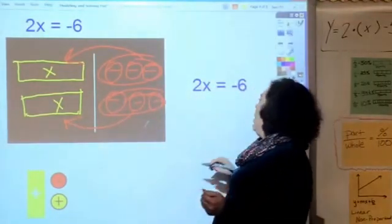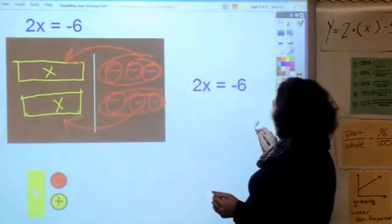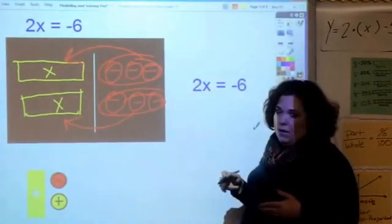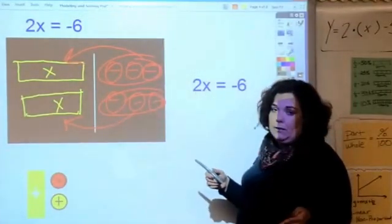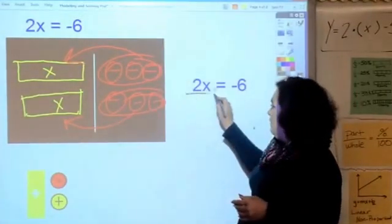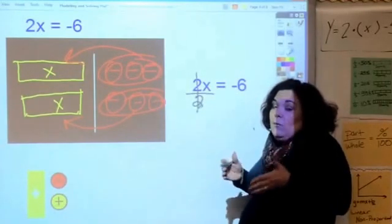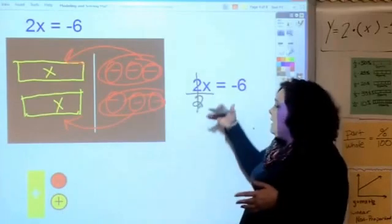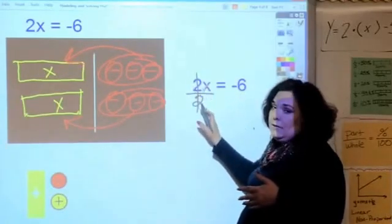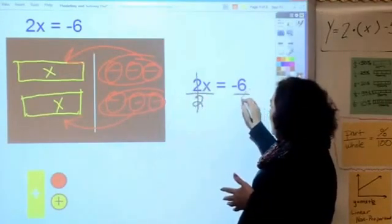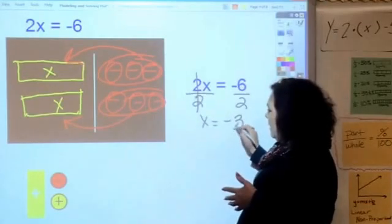If I'm going to do it mathematically, I've got 2x here. I want to get x by itself, and I am multiplying - two times x - so the opposite of multiplying is dividing. I'm going to divide by two because that cancels out to one. Whatever I do to this side I do to this side, so x equals negative three, and that's what I've shown.